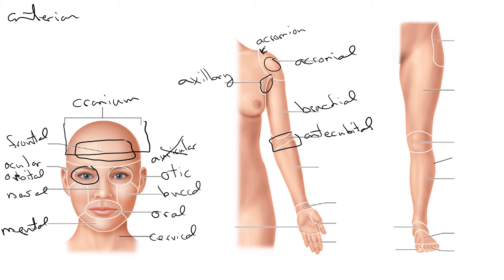Then the forearm — we refer to that as the antebrachial region. Then we have the wrist here, and it has bones in it called carpals. So this is the carpal region.